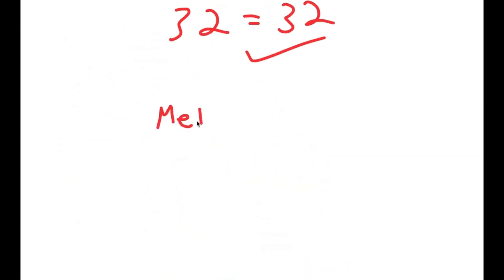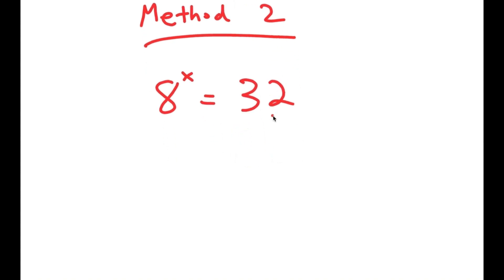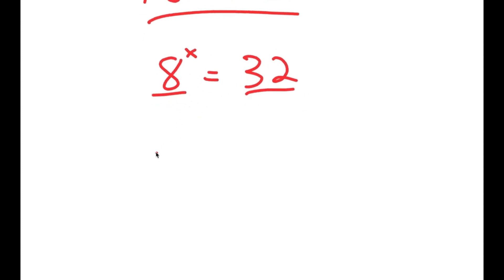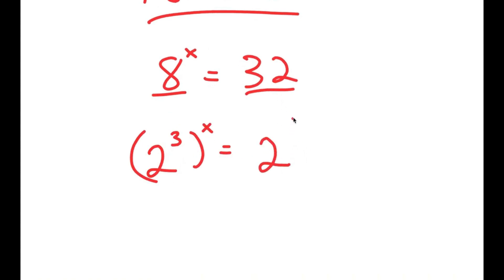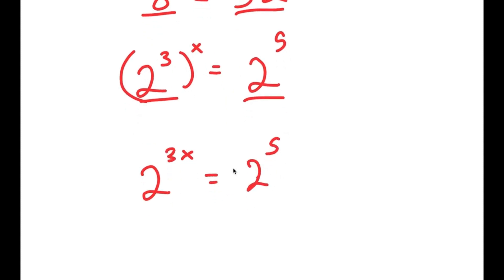I also have a second method of solving this problem. For the second method, we have the same equation: 8 to the power of x is equal to 32 — and this is a simpler method. I'm going to rewrite both numbers with the same base: 8 as 2 to the power of 3, and 32 as 2 to the power of 5. So 2 to the power of 3 to the power of x is the same thing as 2 to the power of 3x, which is equal to 2 to the power of 5.